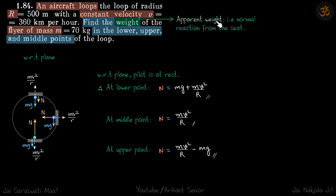So apparent weight is basically, you can think like that, that if you are standing on a weighing machine, how much weight it will show. So that is same as the normal reaction. So that's what we need to calculate: what is the normal reaction from the seat that the flyer is going to get.